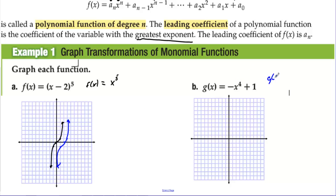For g(x) = −x⁴ + 1: starting with x⁴, we get 0⁴ = 0, 1⁴ = 1, 2⁴ = 16 — it goes very steep. The negative sign reflects the graph over the x-axis, so any point on the x-axis stays while 1 goes to −1. Then the plus 1 shifts everything up 1 unit, producing a downward-opening curve shifted up one.